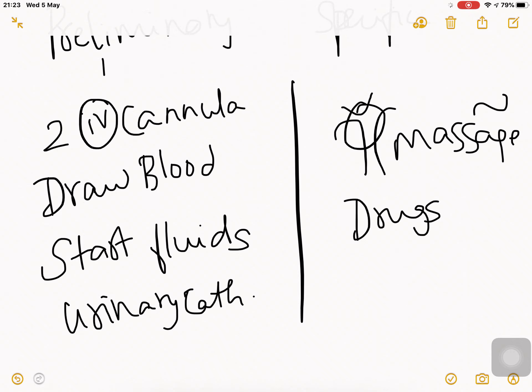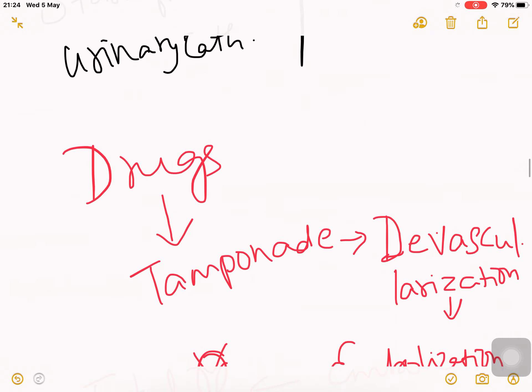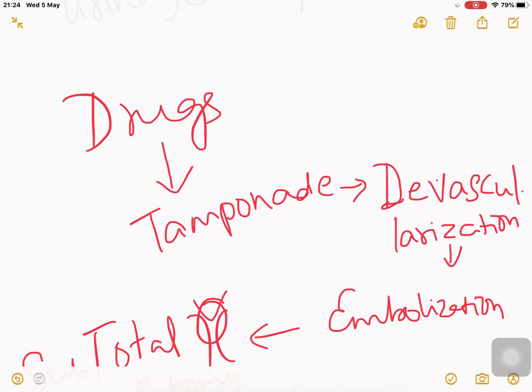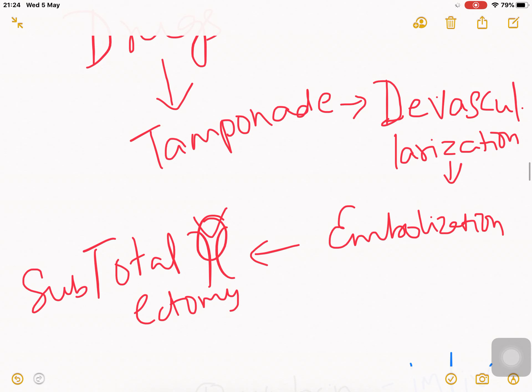For specific management, the WHO used to recommend uterine massage for active management of third stage of labor, but now uterine massage causes inconvenience to the patient. We follow certain steps: first give drugs, then if drugs don't work, give tamponade which is compression on the uterus. Third, devascularization by ligating arteries. Fourth, embolization by injecting polyvinyl alcohol into a large artery. Finally, if it doesn't subside, remove the uterus - a really bad thing after delivering a baby.